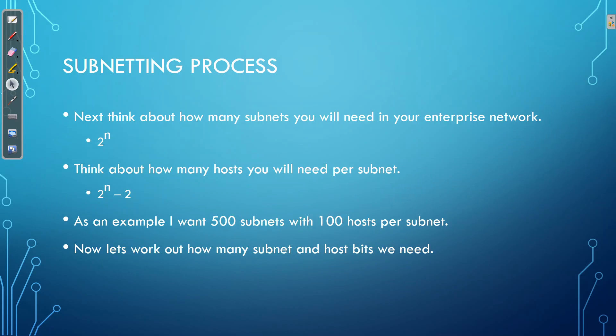Next, we need to think about our requirements: how many subnets do I need, and how many hosts per subnet? How do I find out how many subnets I need? It's this simple: look at how many VLANs you've got, look at your WAN links and point-to-point links. You will need a subnet for every single LAN segment that you have. For hosts per subnet, just take your largest subnet and account for that. As an example, I need 500 subnets and my largest subnet is going to need 100 hosts — those are my requirements.